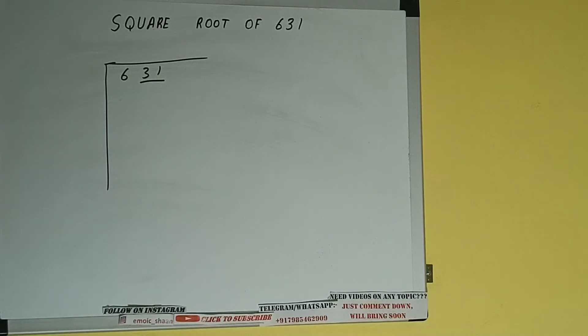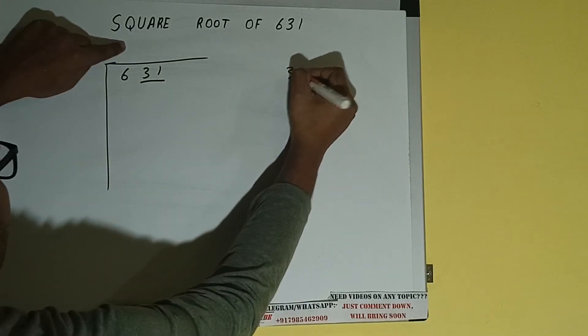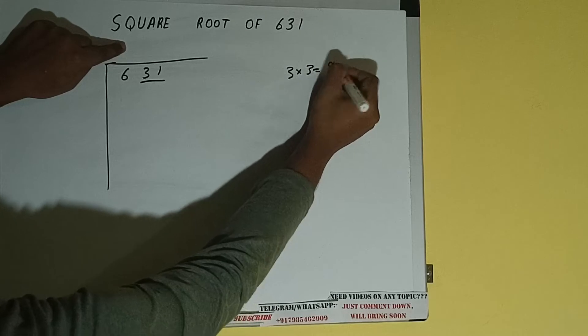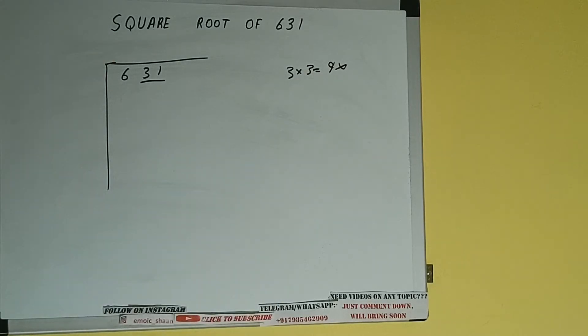The rule is whatever number we write here we have to write here also. So if we write 3 here and 3 here it will be 9 which is greater than 6 so we cannot take it.